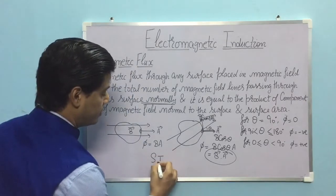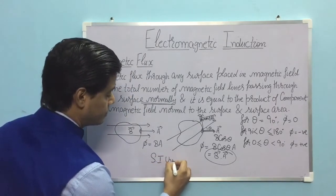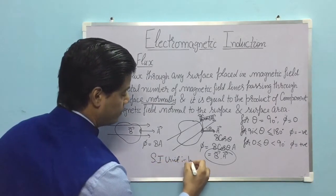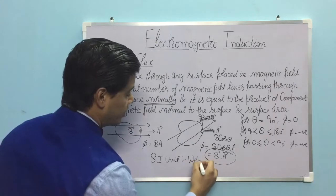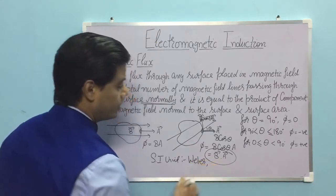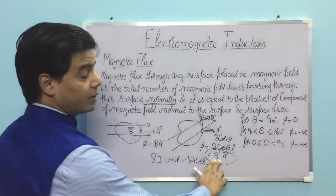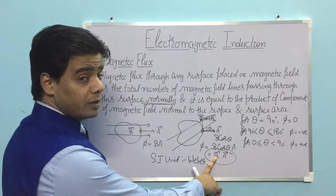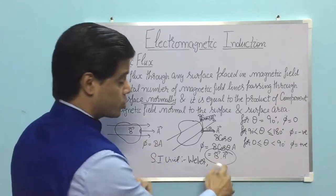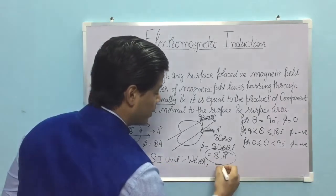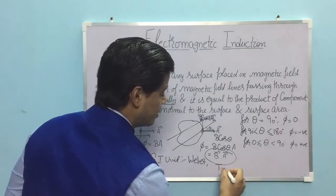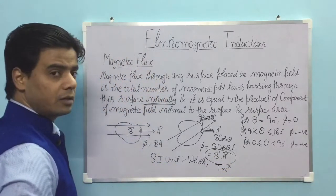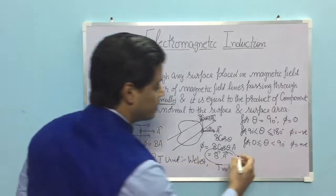The SI unit of magnetic flux is the Weber. From the formula, magnetic field has the unit Tesla and area is meter squared, so we can also write the unit as Tesla meter squared.